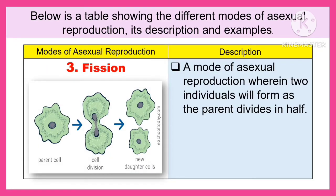The third one is fission. It is a mode of asexual reproduction wherein two individuals will form as the parent divides in half.